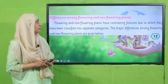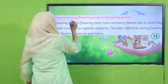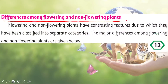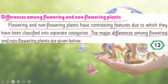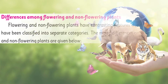Differences among flowering and non-flowering plants: flowering and non-flowering plants have contrasting features due to which they have been classified into separate categories. The major differences among flowering and non-flowering plants are given below. So these are the contrasting or major differences — let's have a look.